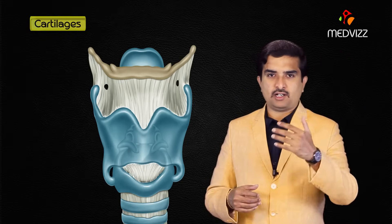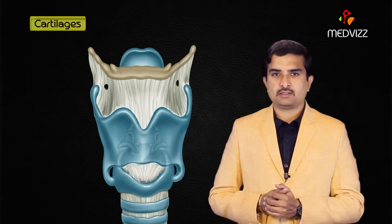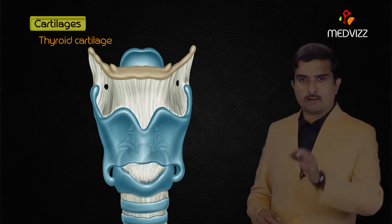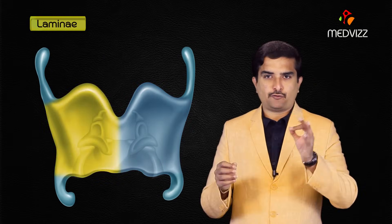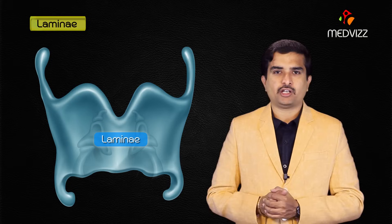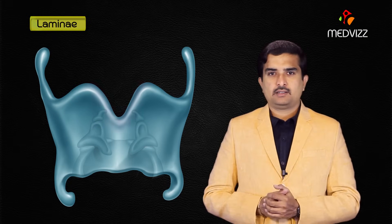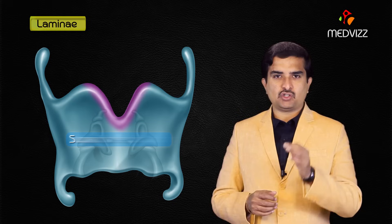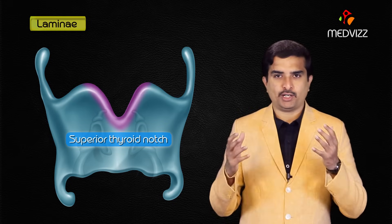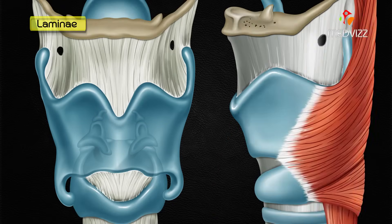The larynx is composed of a cartilaginous skeleton. The thyroid cartilage is composed of two laminae and two pairs of cornua. The laminae are the plates which form the majority of the thyroid cartilage, and the indentation in the midline is known as the superior thyroid notch.